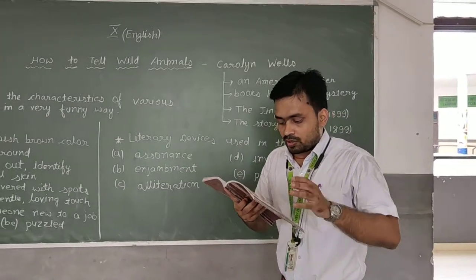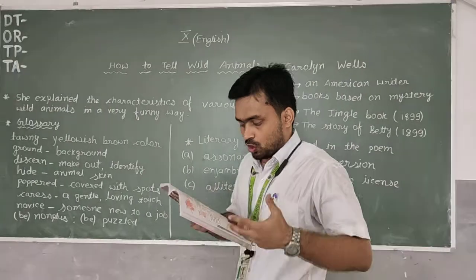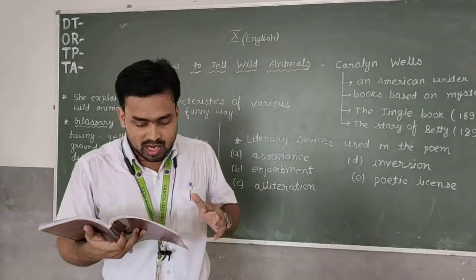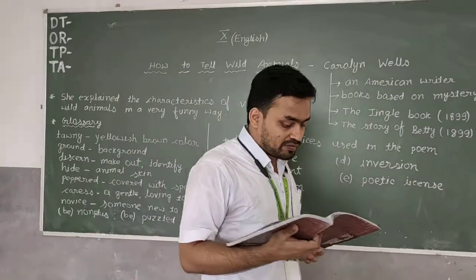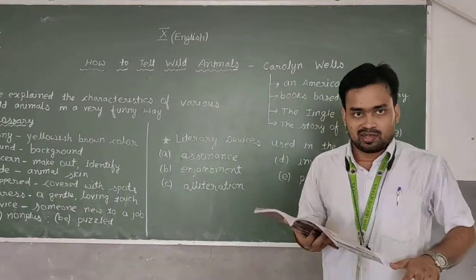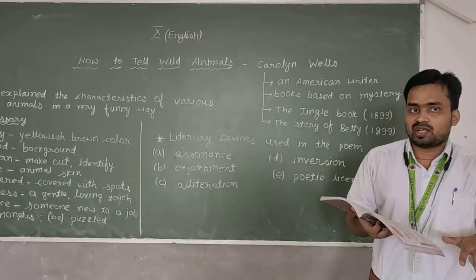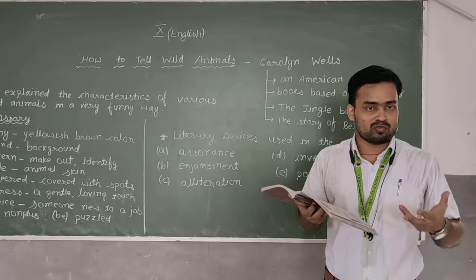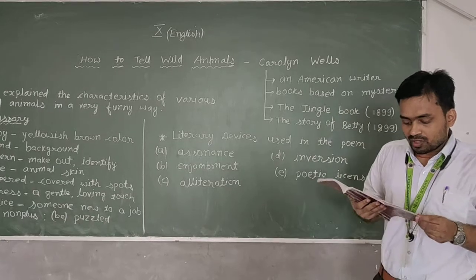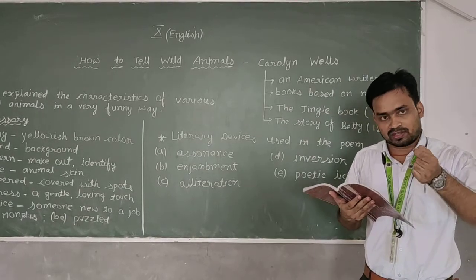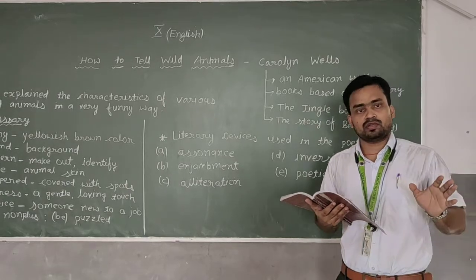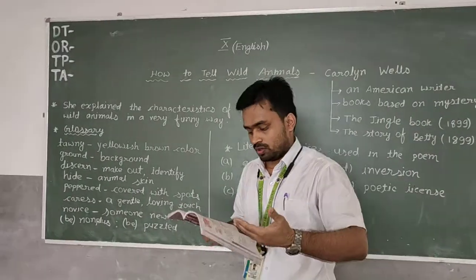Next stanza: Though to distinguish beasts of prey, a novice might nonplus, the crocodile you always may tell from the hyena thus: Hyenas come with merry smiles, but if they weep, they're crocodiles. Now, if hyenas are weeping, they are crocodiles. See how the poet is explaining the different identification of animals, of wild animals. So again, enjambment is used in the first and second line, and then in fourth line, enjambment is used. There is no obstruction in the first line, and it continues.